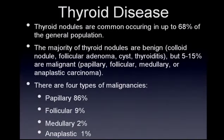Thyroid nodules are extremely common, occurring in up to 68% of the general population. The vast majority of thyroid nodules are benign, either being colloid nodules, follicular adenomas, cysts, or thyroiditis. However, 5% to 15% are malignant, and there are four types of malignancy that can occur within the thyroid gland.